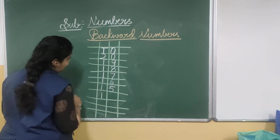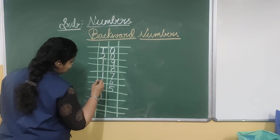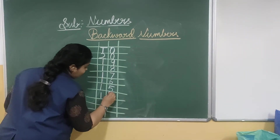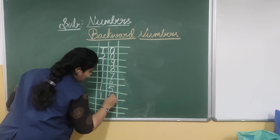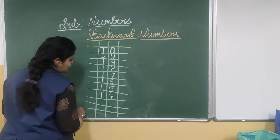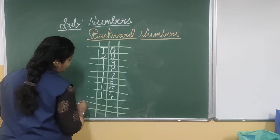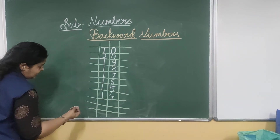Write 1 under the 10's place. And 5 before it is 4. So 15 before is 14.